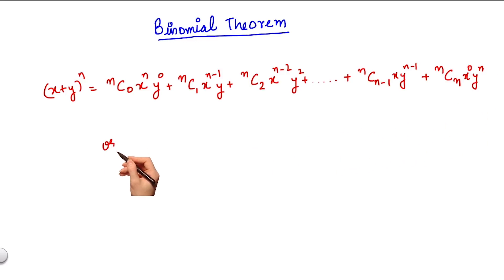In summation form it can be written as (x + y)^n equals summation from r equals 0 to n of nCr x^(n-r) y^r. We can straight away make some observations from looking at this expansion.